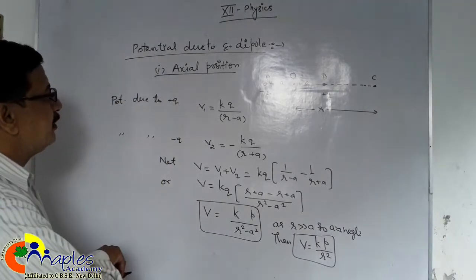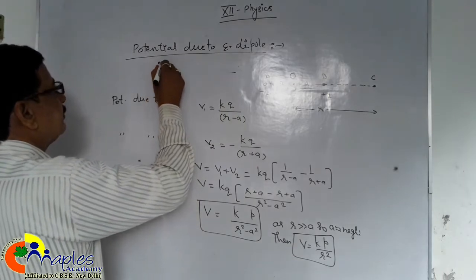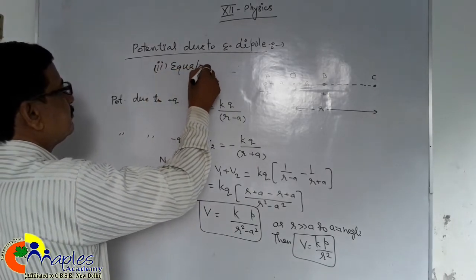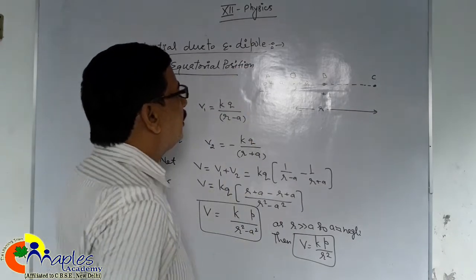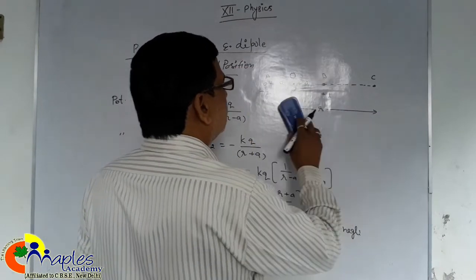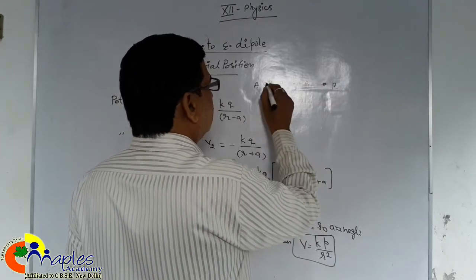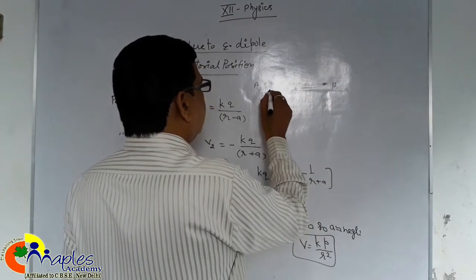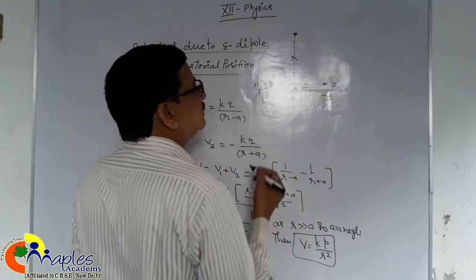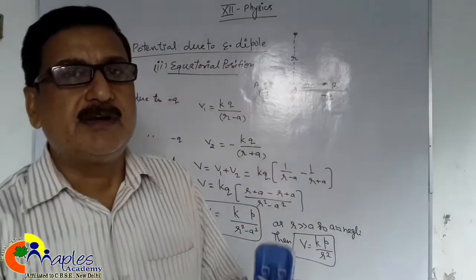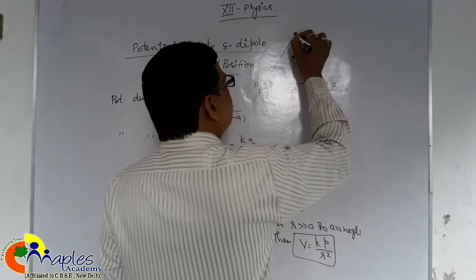Now again in equatorial position. Second is equatorial position. Again, now point is in equatorial position. AB is a dipole of length 2a. Midpoint is O, and made by minus Q plus Q charges. We have to determine electric potential at point C at a distance R from midpoint O on bisector. We have to determine potential at bisector of AB. Join A with C, B with C.